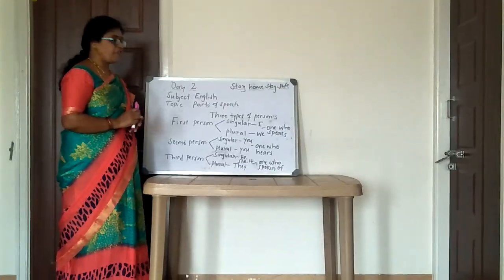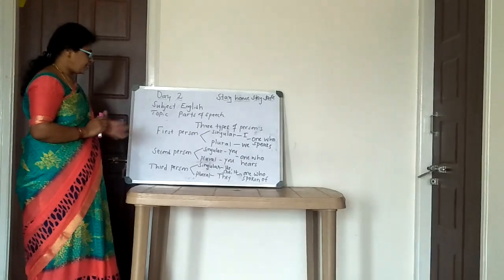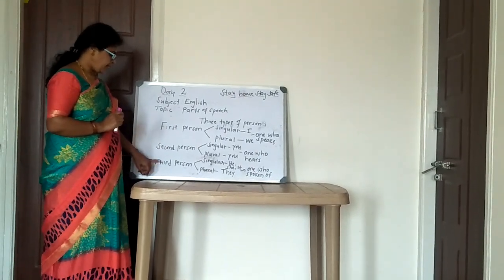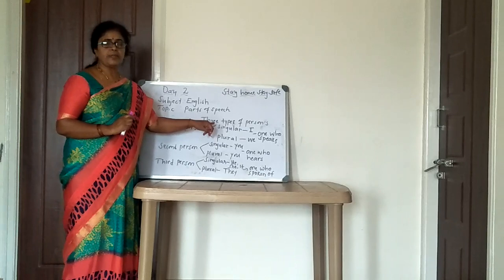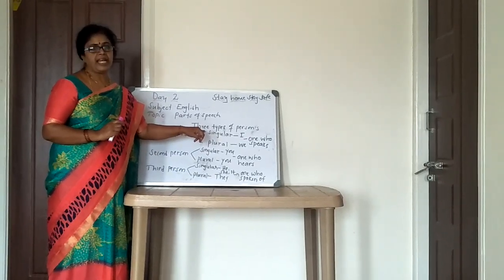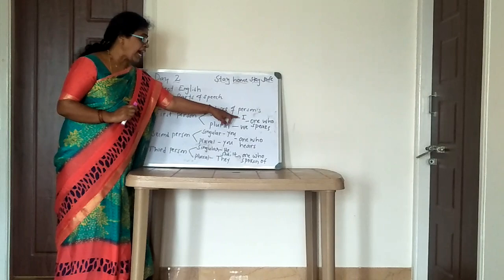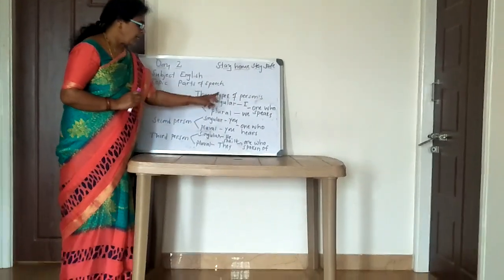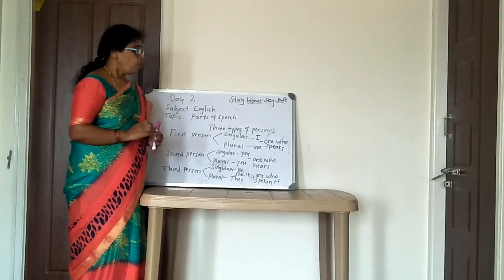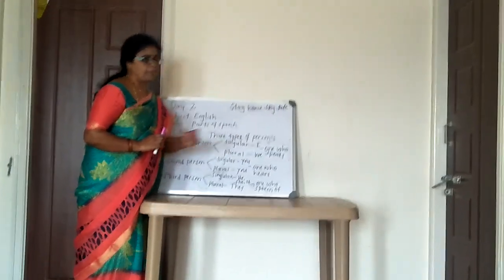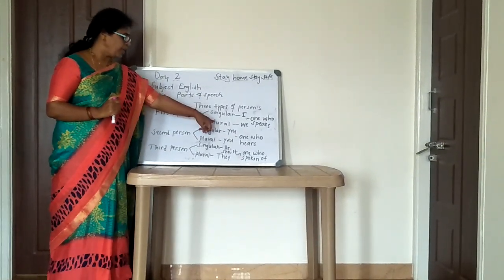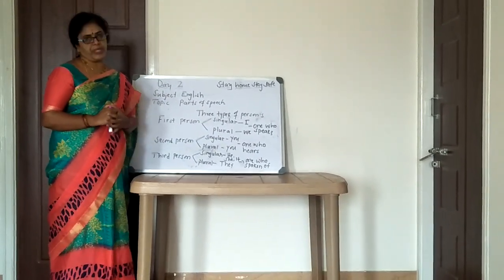In parts of speech, you have to learn three types of persons: first person, second person, and third person. First person singular is 'I' and first person plural is 'we' — these are the ones who speak. I speak, we speak.